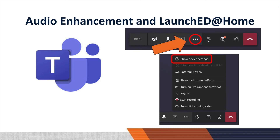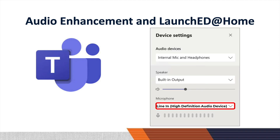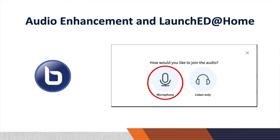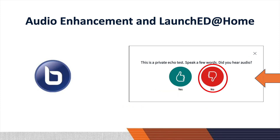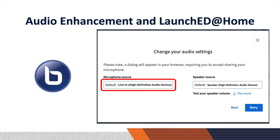To connect audio enhancement in Teams, click the More Actions button, then click Show Device Settings. Select Line In — High Definition Audio Device. To connect to audio enhancement for BigBlueButton, the setup is similar: click Microphone, but then select No when prompted for the echo test so you can check the settings.